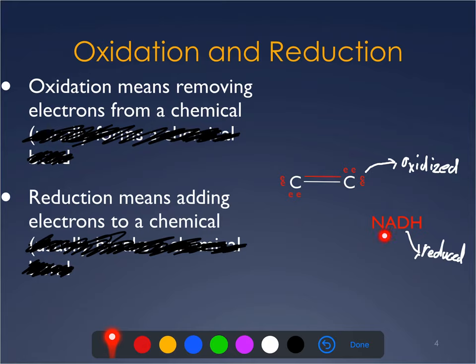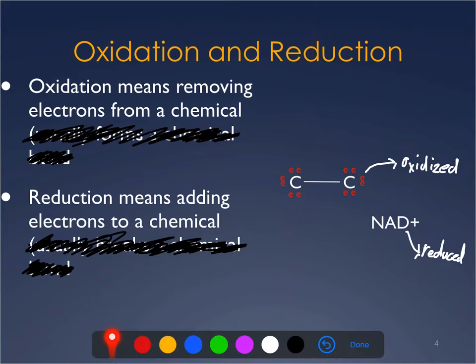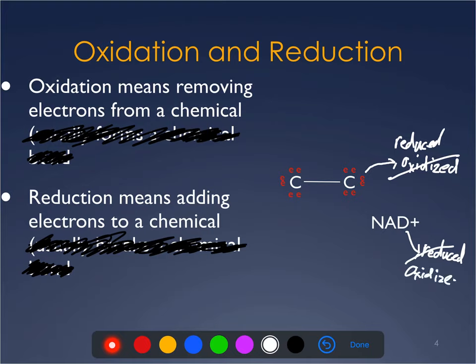This NADH can now go somewhere else in the cell where there's another molecule that needs to be reduced. The process can then be reversed: the NADH will yield up its electrons to a totally different molecule, reducing it — and in doing so, NADH gets oxidized back.